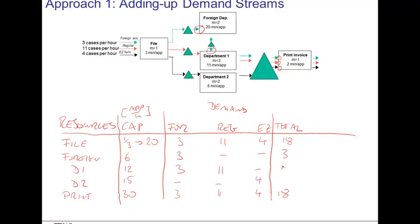A nice process flow diagram, ideally using different colors to illustrate the different flows, is very helpful for these calculations. We can compute the ratio between the demand and the capacity as a sense of busyness — we call this measure the implied utilization. Notice this measure is different from utilization, which is defined as flow rate divided by capacity and by definition must be less than or equal to one hundred percent. In contrast, implied utilization can well exceed one hundred percent if there is more demand for a service than we have capacity.